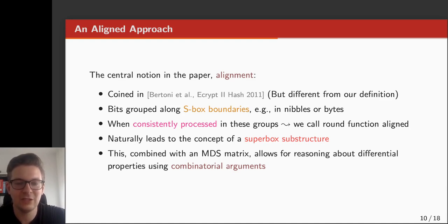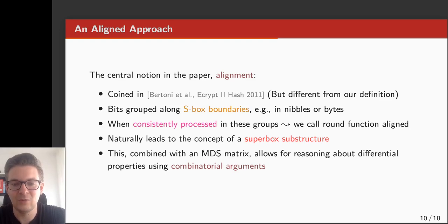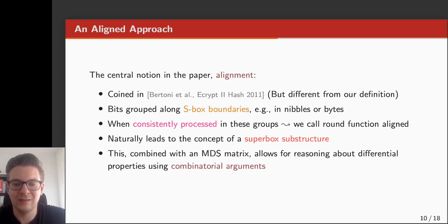From the formal definition of alignment, it immediately follows that there exists a super-box substructure. Combining this super-box substructure with a mixing layer that is the parallel application of an MDS matrix, you can reason about the differential properties of the cipher using combinatorial arguments, making it possible to easily give bounds on trail weights. This was one of the selling points of AES — that it was resistant against differential cryptanalysis based on these trail bounds. However, to be completely resistant against differential cryptanalysis, you need more than just trail bounds.